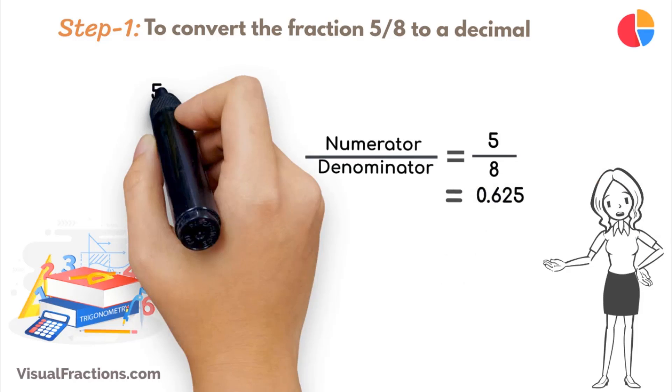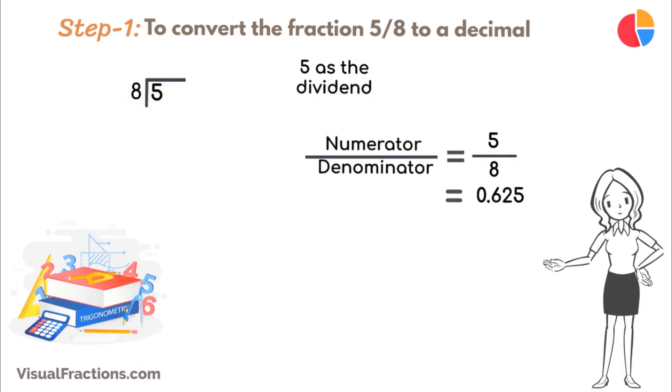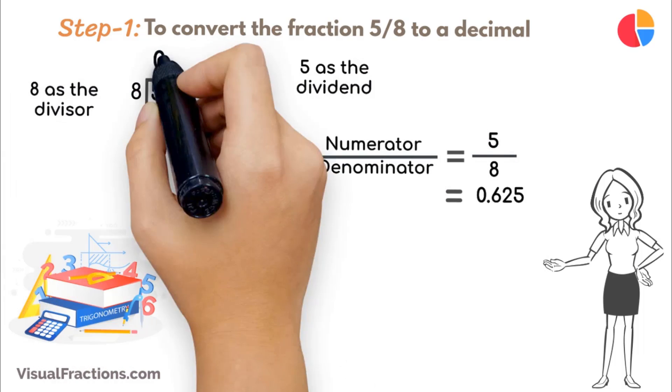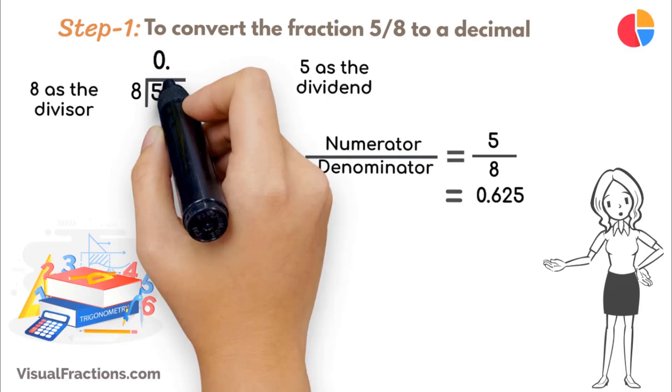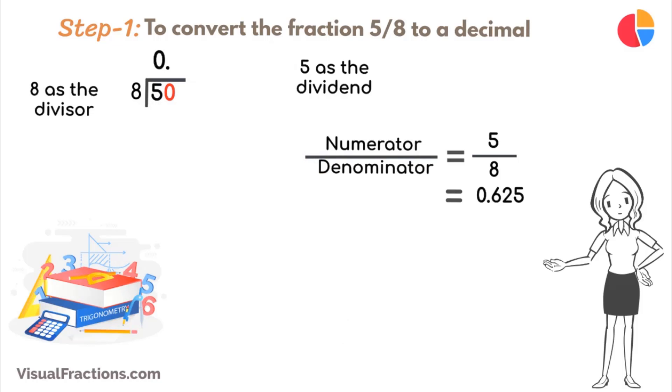But let's perform this division by hand using long division. Place 5 as the dividend and 8 as the divisor. Since 8 doesn't fit into 5, place a decimal point in our quotient and bring down a 0, making it 50.